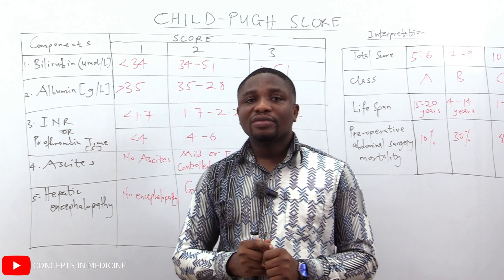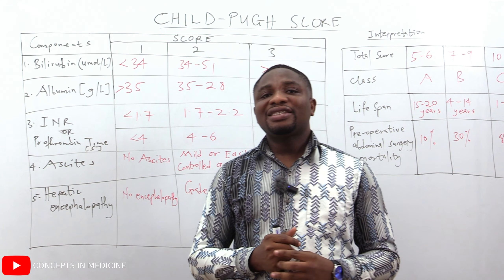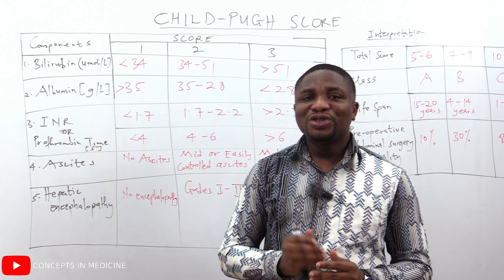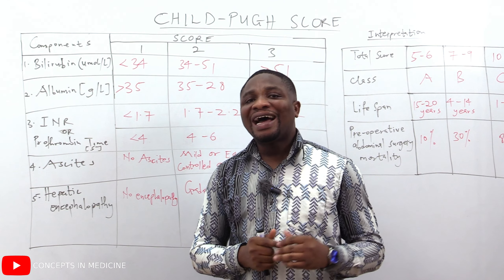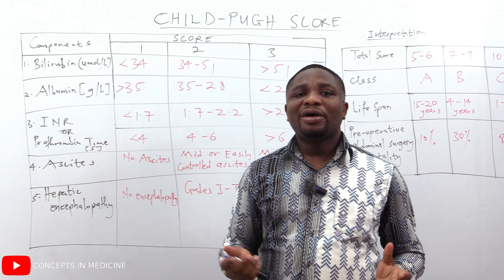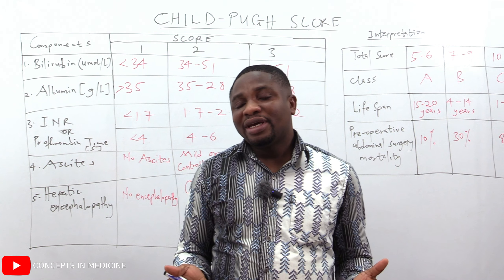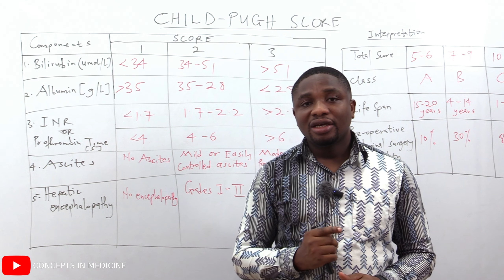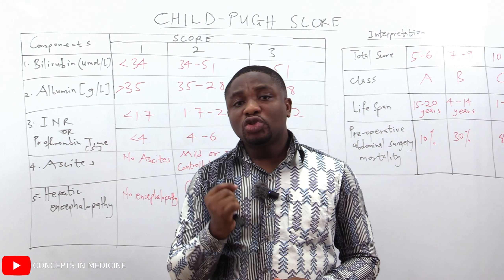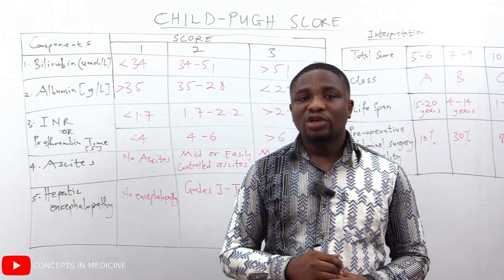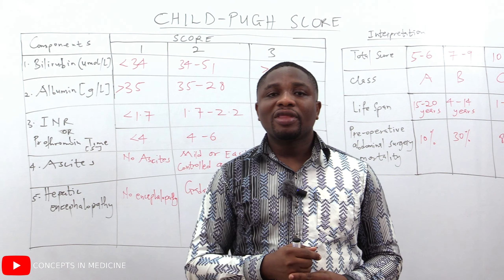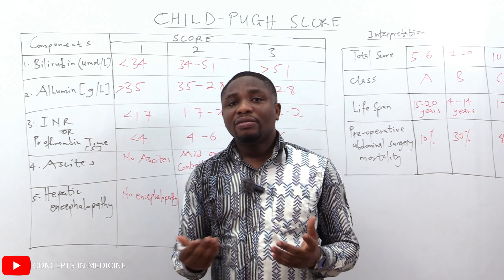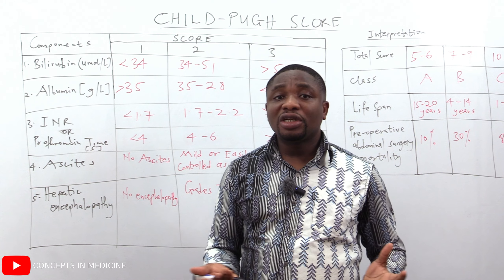For bilirubin, with units in micromoles per liter, the lower the level of serum bilirubin, the better the outcome. If serum bilirubin is less than 34 micromoles per liter, you give a score of one. If it ranges from 34 to 51 micromoles per liter, a score of two. If it is greater than 51 micromoles per liter, a score of three.